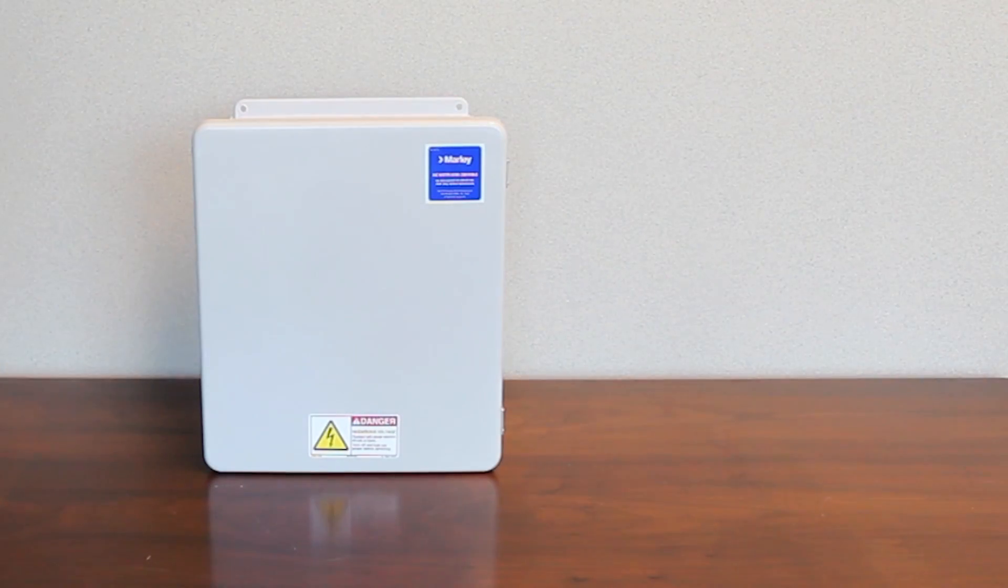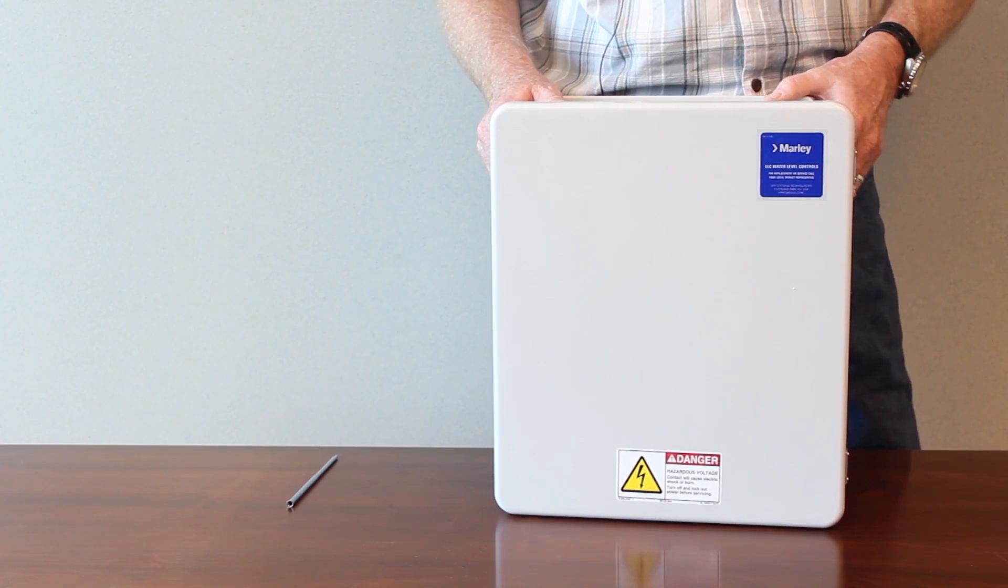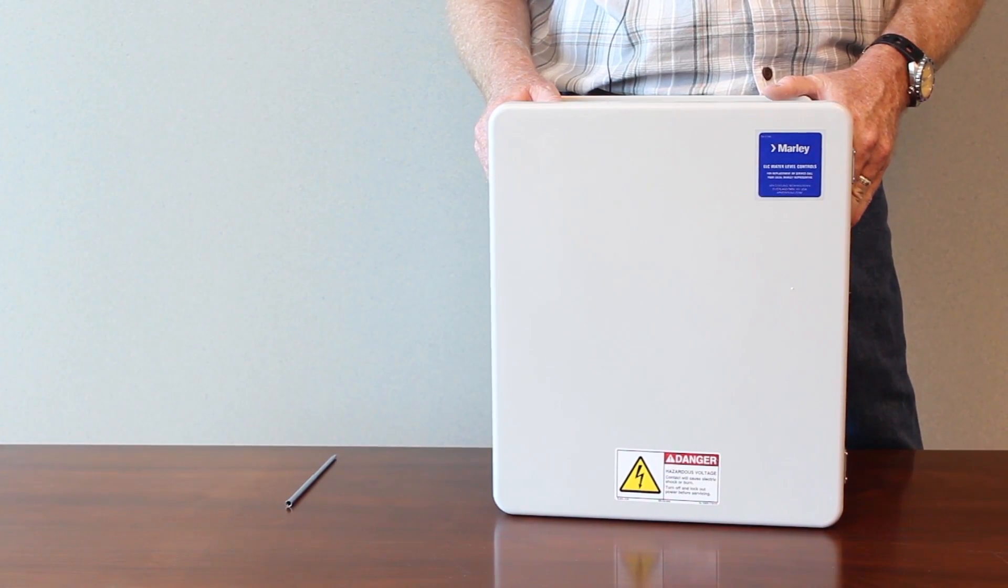The control panel is furnished in a NEMA 4X fiberglass outdoor enclosure. It is built to UL 508 standards and available in 31 different configurations. The configurations include multiple card levels such as for your makeup, which is quite standard, high alarm, low alarm, high cutoff, and low cutoff. I'm going to go ahead and open up this panel so we can take a look at the inside.